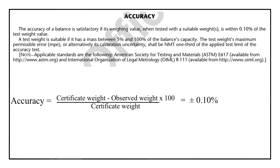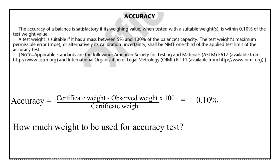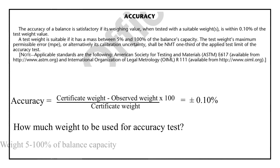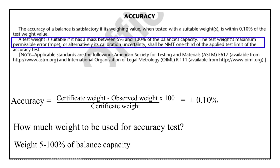The question arises: how much weight should we select to carry out the accuracy test? Any weight between 5 to 100 percent of the balance capacity can be taken for the accuracy test, and this statement is also mentioned in USP Journal Chapter number 41.